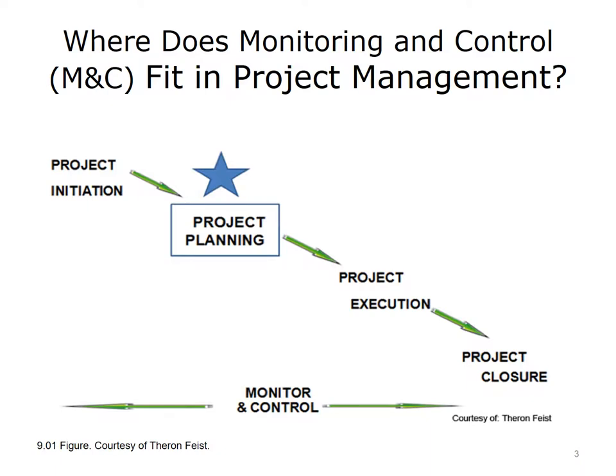First, let's take a look at where monitoring and control fit into the spectrum of project management. As a quick review of the five project management processes: initiation processes define a new project or new phase of an existing project; planning processes lay out the project scope and strategies to achieve its objectives; executing processes accomplish the work of the project and satisfy the project objectives; and the closing processes finalize all activities and formally close the project. These four processes, illustrated by diagonal arrows running from left to right, work more or less sequentially. But monitoring and controlling processes operate across this whole spectrum, as shown by the horizontal arrows running back and forth along the first four processes.